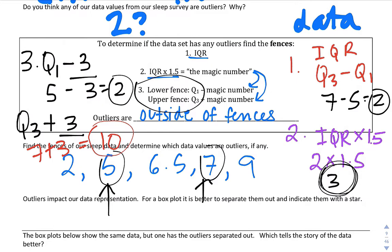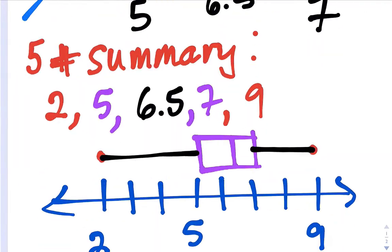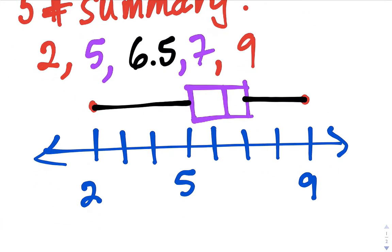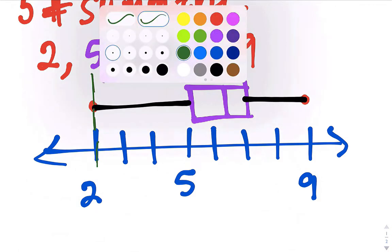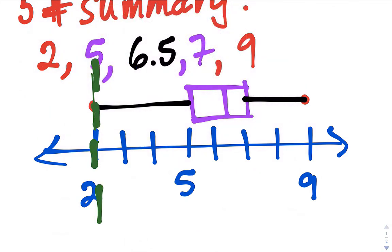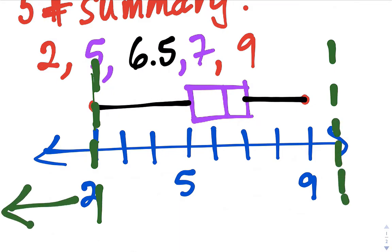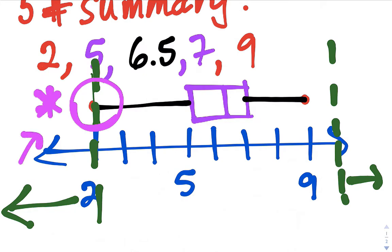Let's go back to our box and whiskers plot and draw the fences as dashed lines at 2 and at 10. Anything outside the fences — below 2 or above 10 — are outliers. So 2 is right on the fence, which means 2 is not an outlier. If someone had 1 hour of sleep, that would be an outlier shown as a star. If someone had 15 hours of sleep, that would also be an outlier shown as a star way out here.